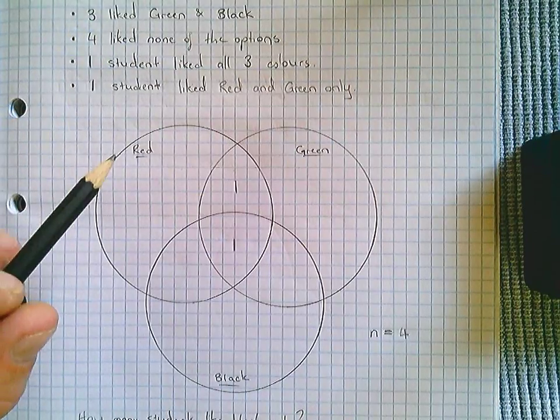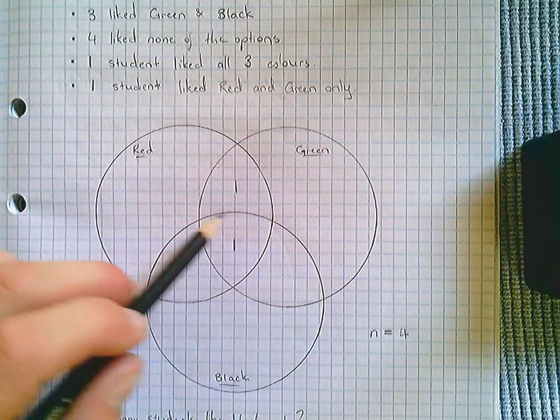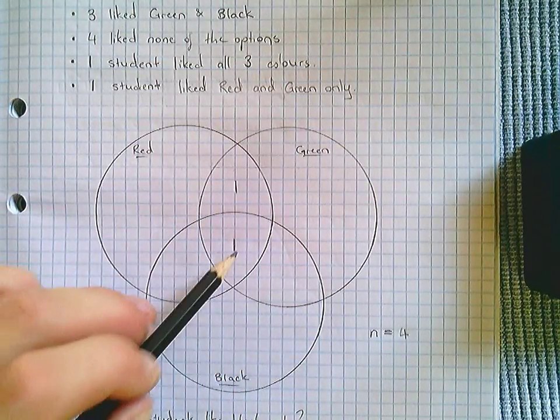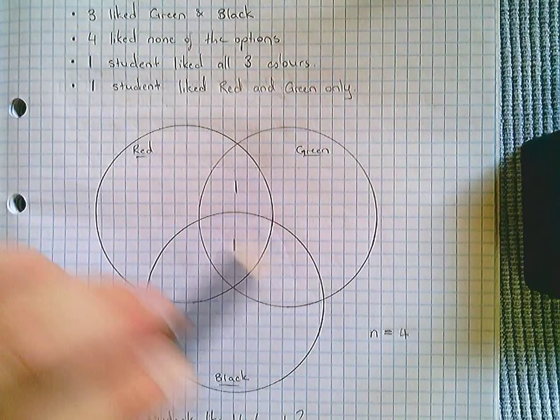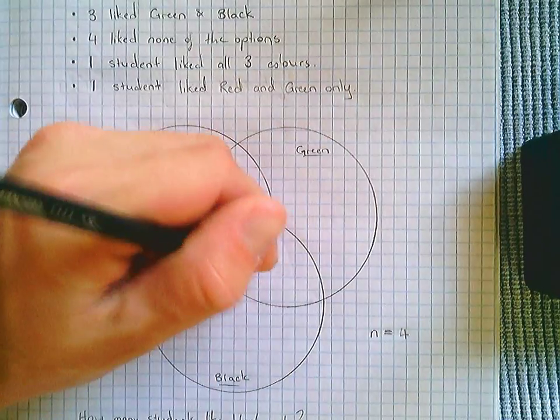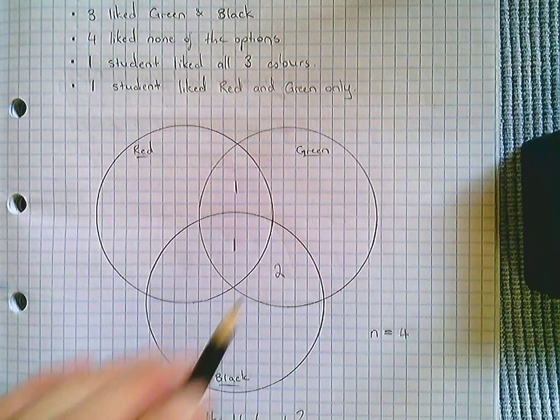Three students liked green and black. Green and black is this intersection between the green circle and the black circle. This student's included in this three who like green and black. So this plus this must add to three, which means that must be a two. Two plus one is three.